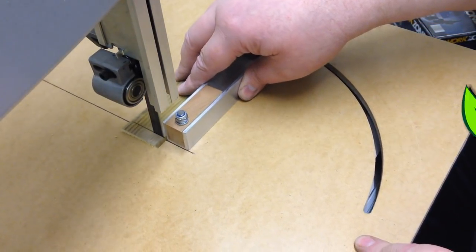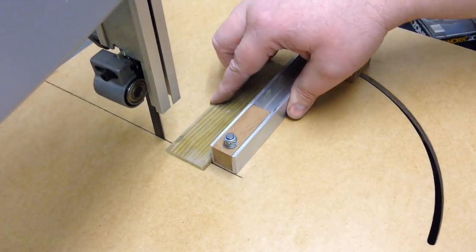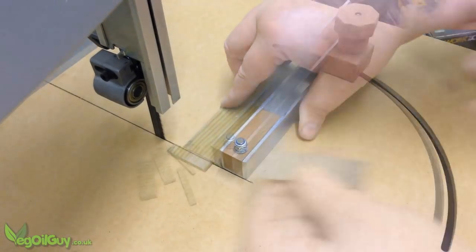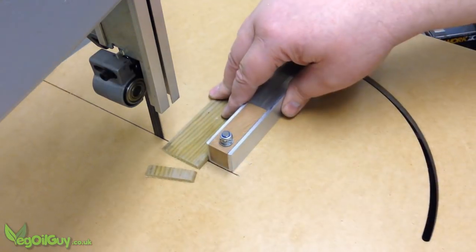Hi guys. Whether on a table saw or a band saw, a sled is a useful addition. It allows you to make fast, accurate 90 degree cuts safely and quickly.